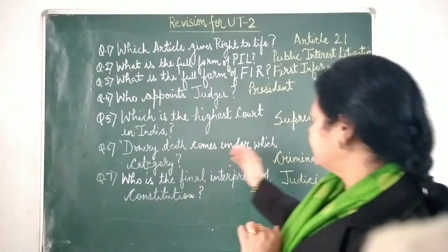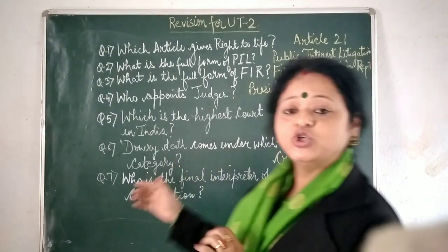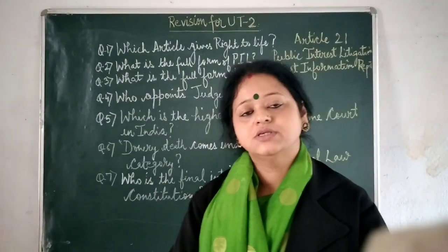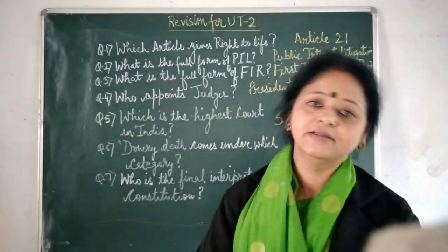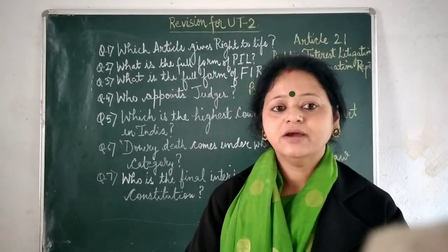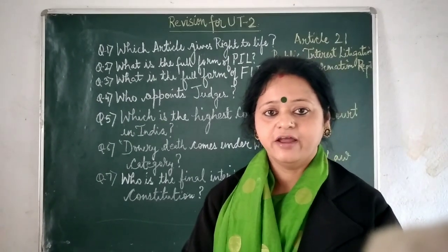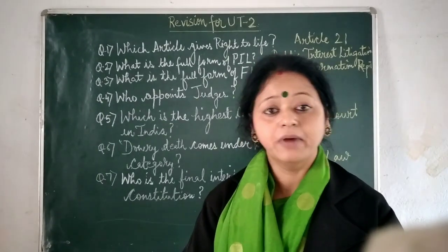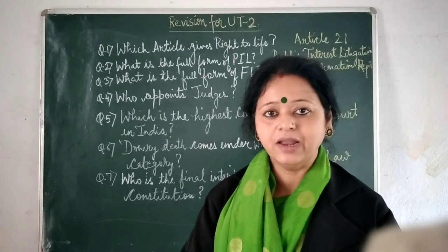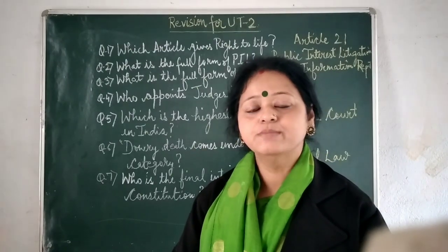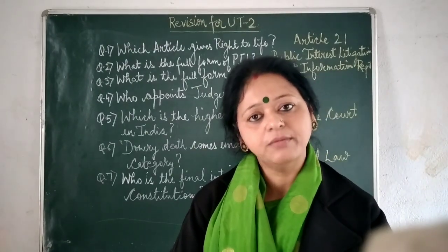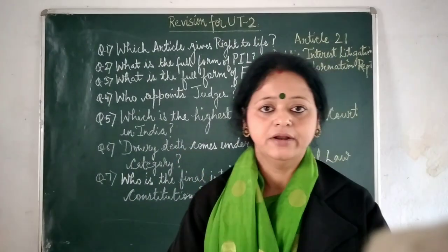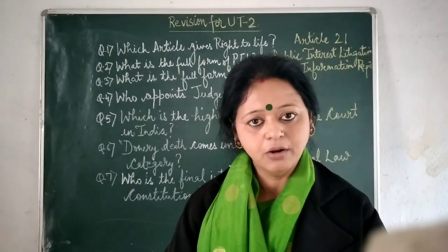Then, dowry death comes under which category? There are two categories of law: civil law and criminal law. When the crime is very serious — when it is related to the killing or murder of someone — those cases come under criminal law. So dowry death will come under criminal law.